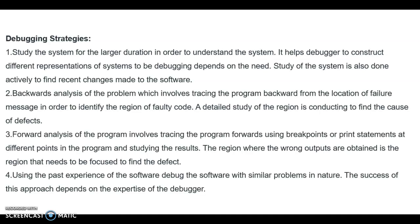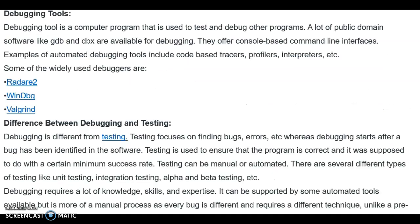Using past experience with the software, debug the software with similar problems in nature. The success of this approach depends on the expertise of the debugger. There are different debugging tools available. A debugging tool is a computer program used to debug other programs. Public domain tools like jdb and dbx are available for debugging, offering console-based command line interfaces. Automated debugging tools include code-based tracers, profilers and interpreters.